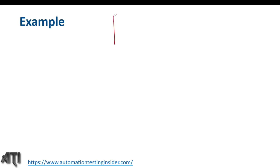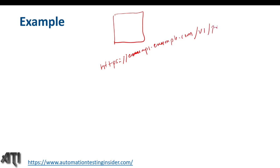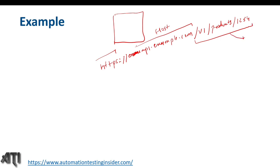Let me give another example so you can understand better. Suppose there is an e-commerce website and we have a URL: HTTPS colon slash slash api.example.com slash v1 slash products slash 1234. Here HTTPS is the protocol, api.example.com is the domain name or host, and slash v1 slash products slash 1234 is the endpoint — it shows exactly where the resource is located and from where we are getting the information from the server.